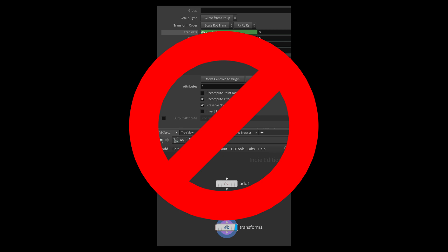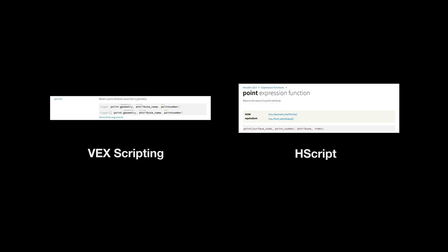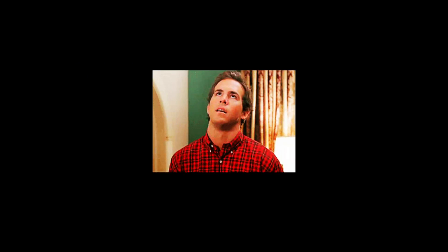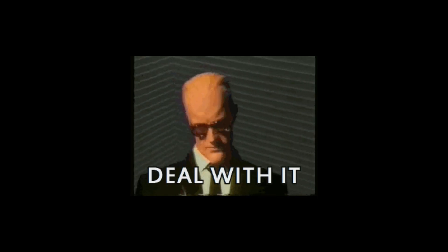There are also subtle differences between functions that you need to look out for. For example, when you use the point expression in HScript, it's a little different from using the same function in VEX. So make sure when you're googling these functions to specify whether you're looking for the HScript channel function or the VEX version. Yes, it's annoying and it's weird, but it's just a quirk of Houdini that we all need to live with.